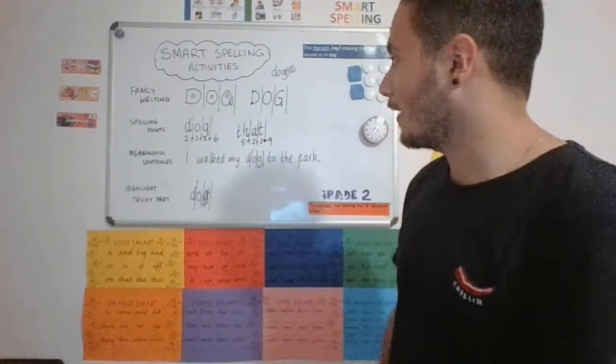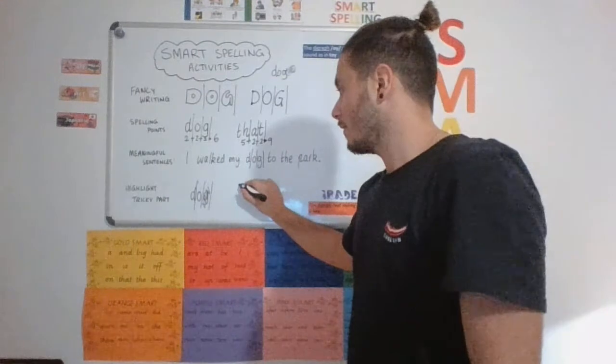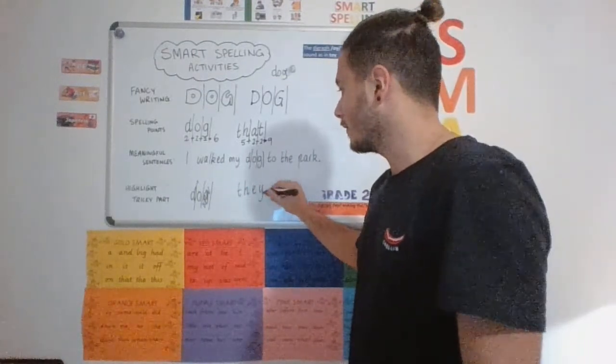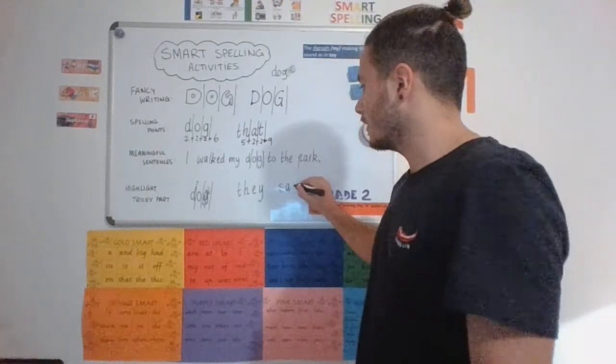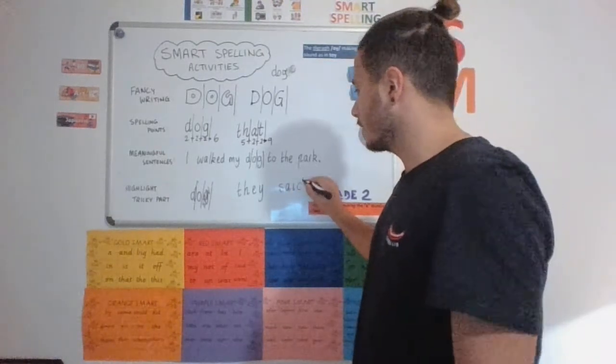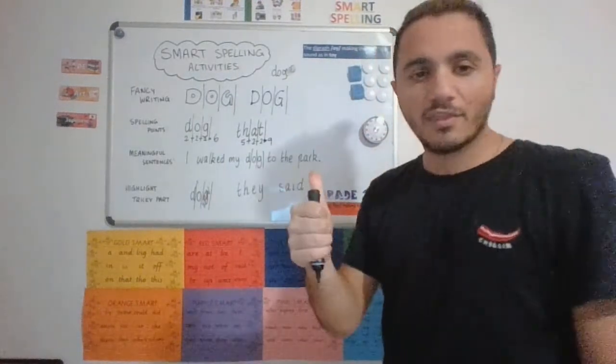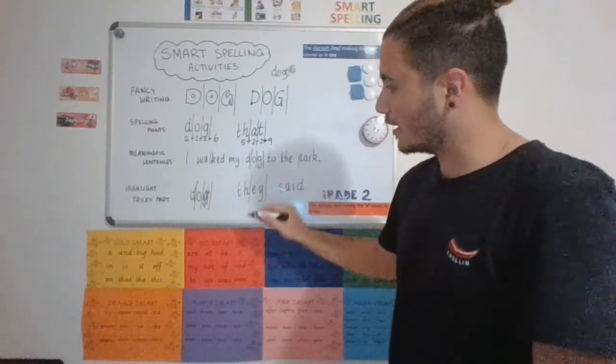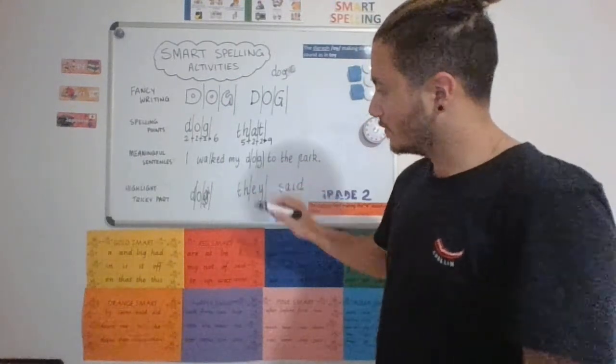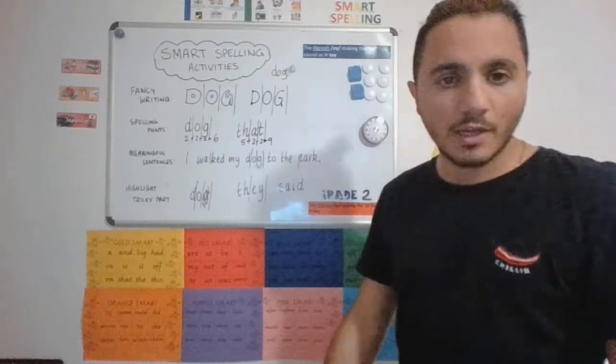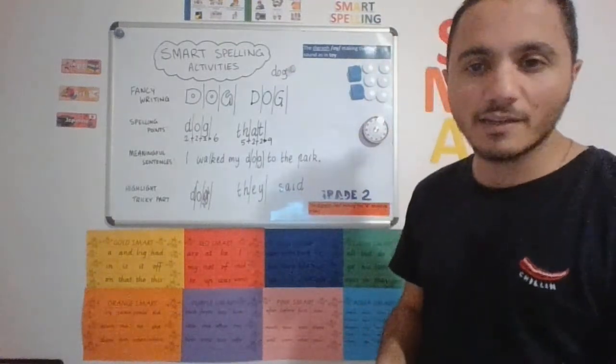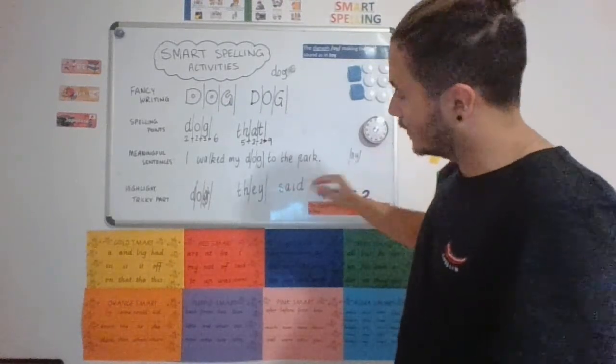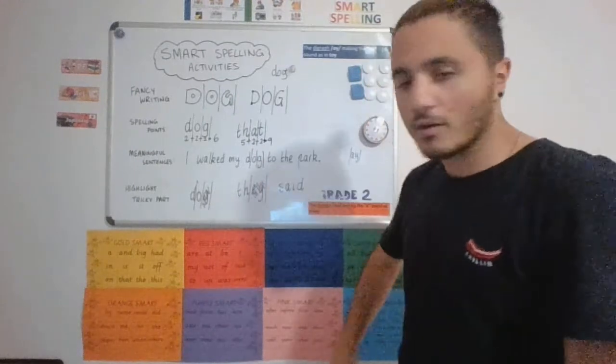But reading other words. So in the word, I've got the word they, or even the word said. It's actually quite tricky. So they, we've got two digraphs in the word they. And the trickiest part in this word would be the EY digraph. It makes the A sound. You can easily be confused for the AY digraph. So that would be the trickiest part of this word. I'm going to highlight that.